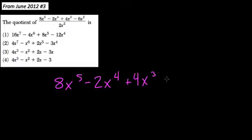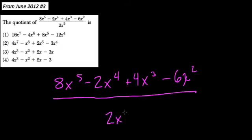Okay, so here you want to find the quotient, or we want to divide out the following expression. It's 8x to the 5th minus 2x to the 4th plus 4x to the 3rd minus 6x squared, all of that over 2x to the 2nd. Now this might look overwhelming because of all the terms,